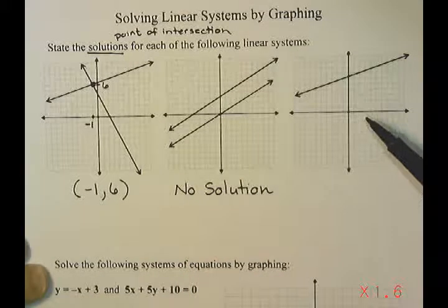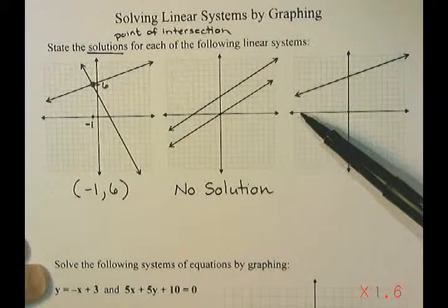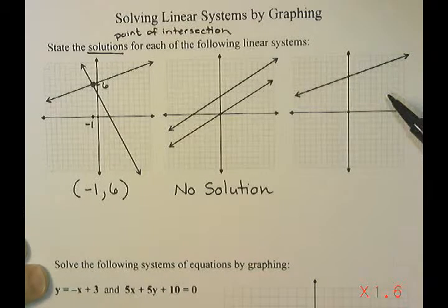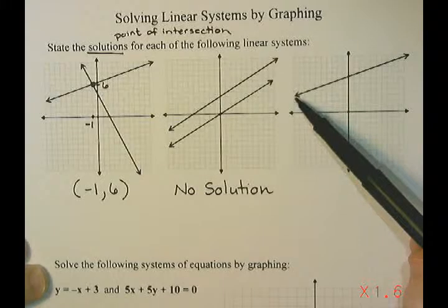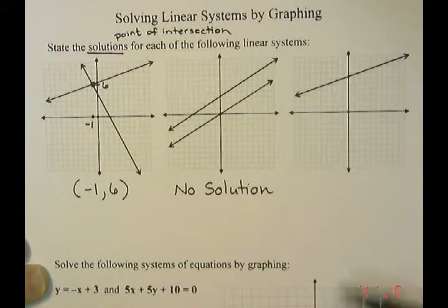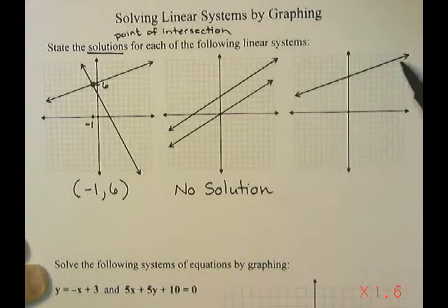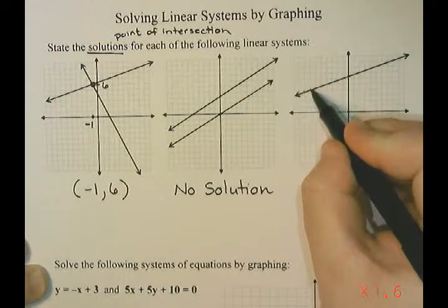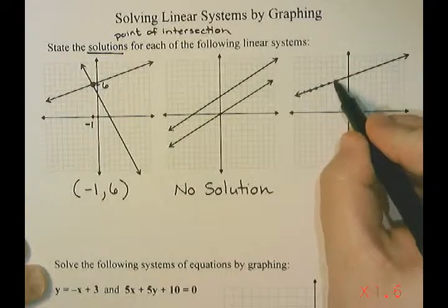Now our last set of lines here are a little misleading. It actually only looks like there is one single line there. And the reason that we can only see one line is that both lines are in the exact same spot. So if both lines are in the exact same spot, they actually intersect at every single point along that line.